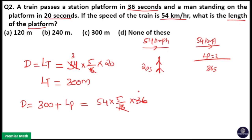Here 18 into 2 is 36, so 5 into 2 is 10, 54 into 10, so 540 is 300 plus length of the platform. So length of the platform is equal to 240 meters.